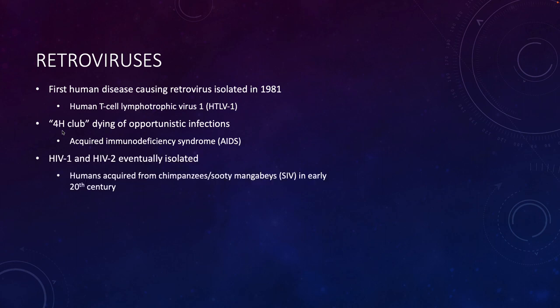Eventually, scientists were able to isolate two very related viral strains that we now call human immunodeficiency virus one and human immunodeficiency virus two, HIV.